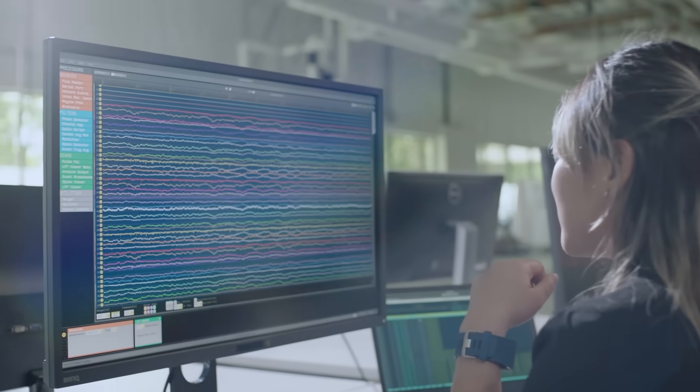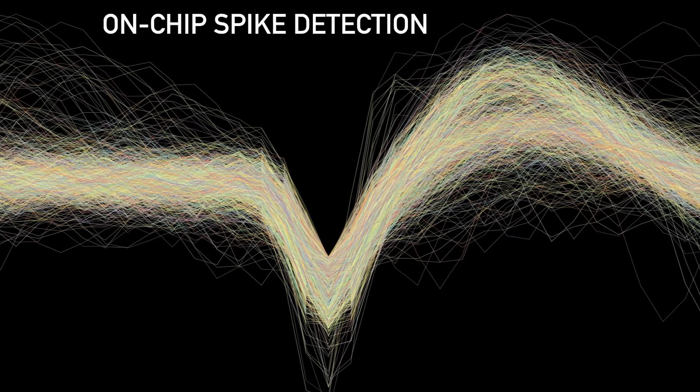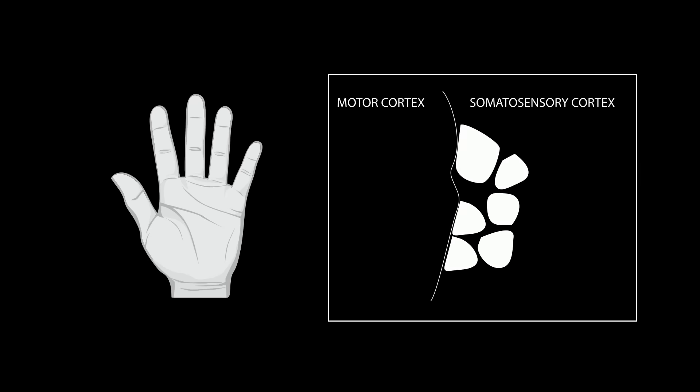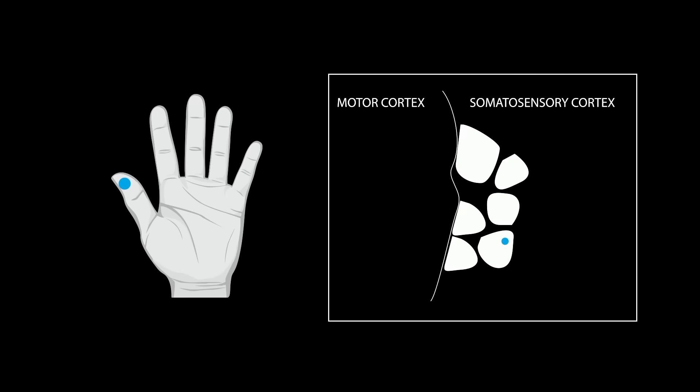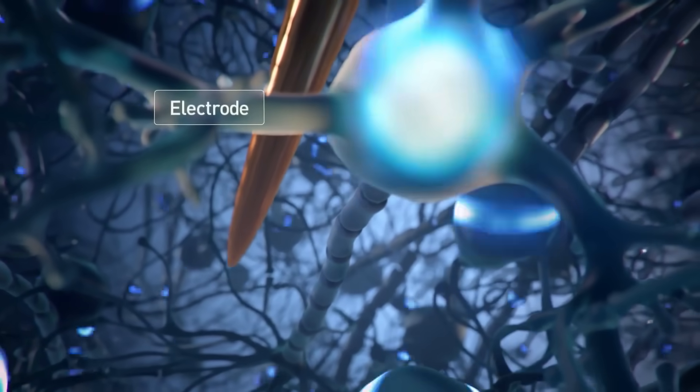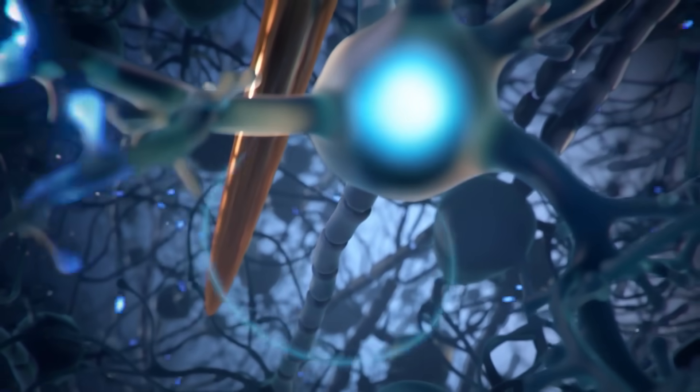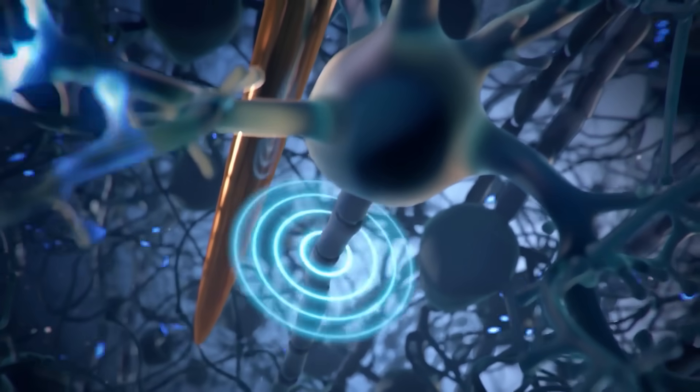The threads then relay that information back to the chip, where it records the impulses, evaluates the data, and then stimulates its own responses. The chip and wires not only read the information that the brain communicates, but also inputs information back into the brain as well.